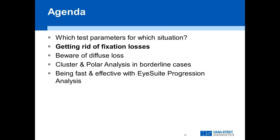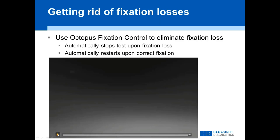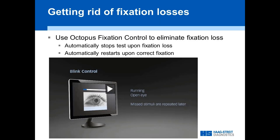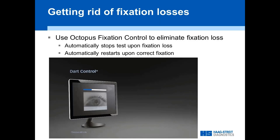Something really unique and helpful about the Octopus is that you can get rid of fixation losses. Fixation losses typically happen when patients look somewhere else because they don't see a stimulus and get worried they're doing something wrong. What the Octopus does is track the pupil. The software notices if somebody closes an eye or looks away and automatically pauses the test. The moment the patient fixates properly again with eyes open, it just restarts — so you're not losing much time and each point is tested reliably.